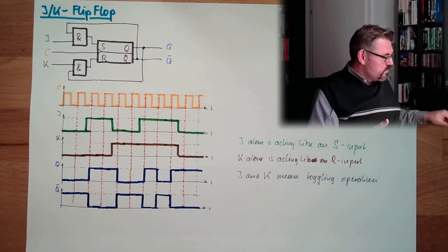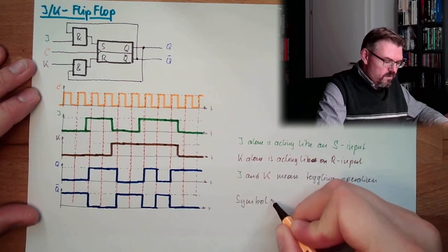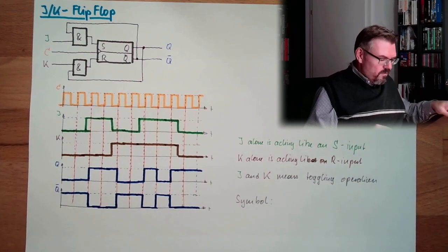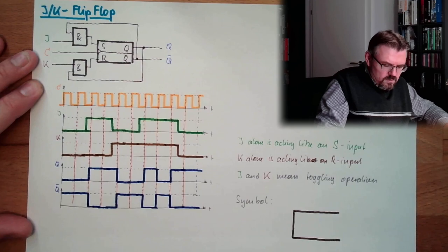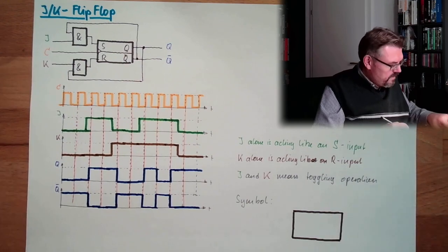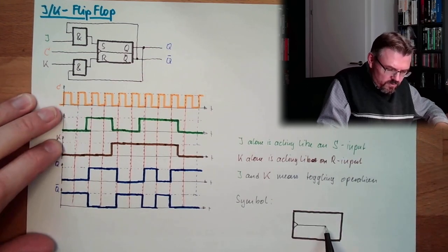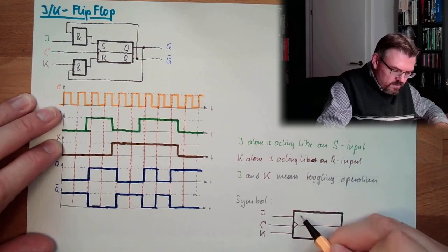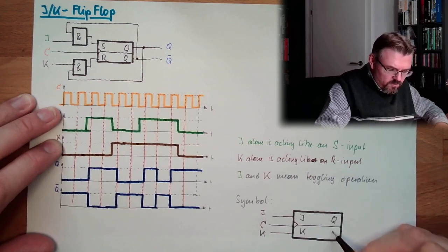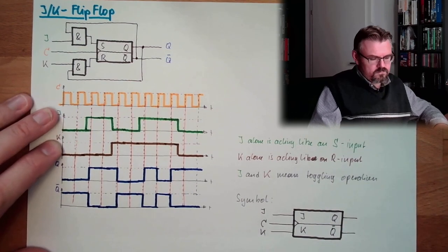There is also a symbol for JK. Looking like that. Not surprisingly, not that different than before. So we have here the C input. We have here J and K. This is marked with J and K. This is Q and not Q.